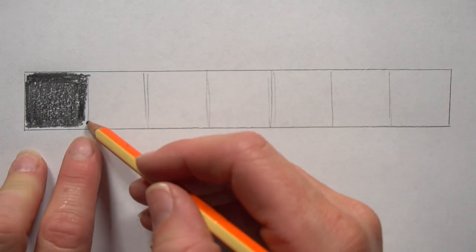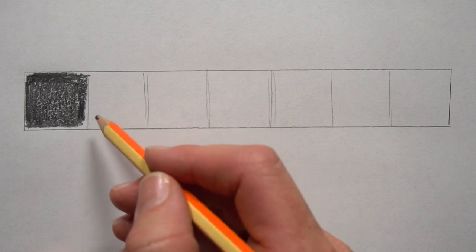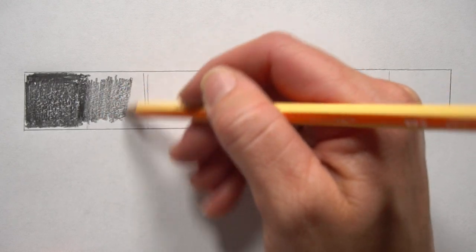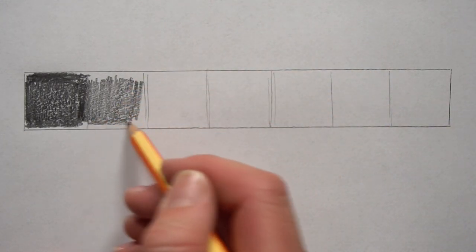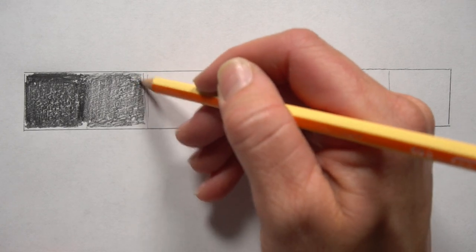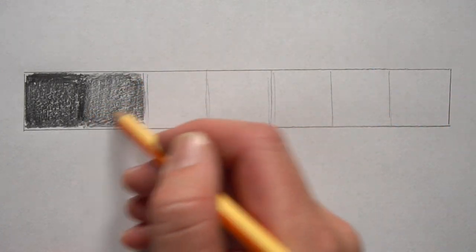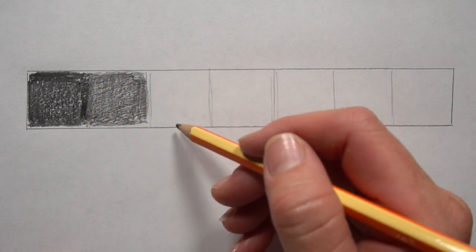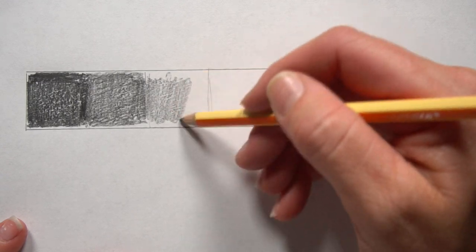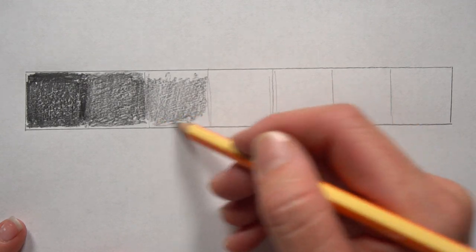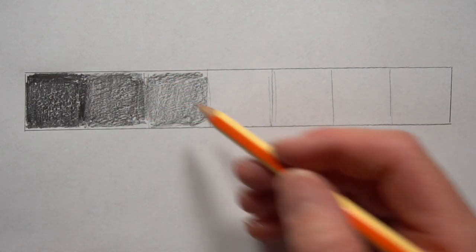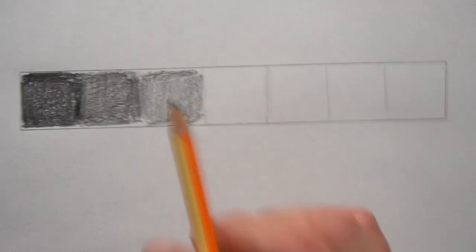And then in the next one, we're just going to try to ease up the pressure just a little bit. So I'm still pressing down, just not as hard. I might need to press a little bit harder. It should be really subtle, just a really subtle change. No jumping in this value scale. And then next to it, we're just going to do the same thing. We're just going to ease up the pressure a little bit.